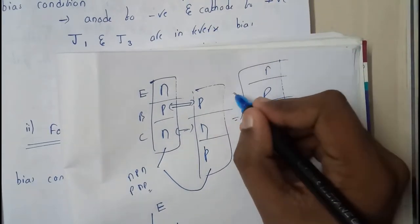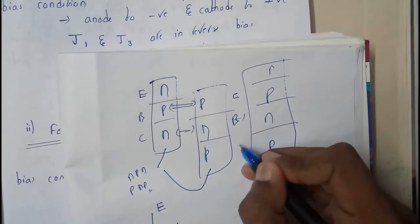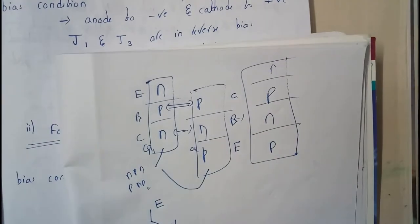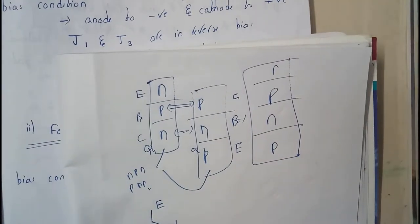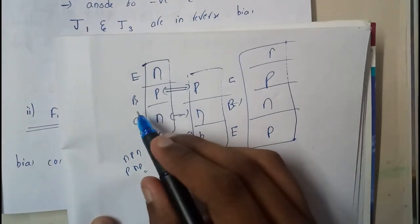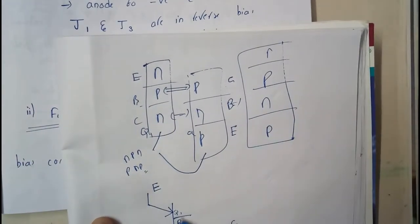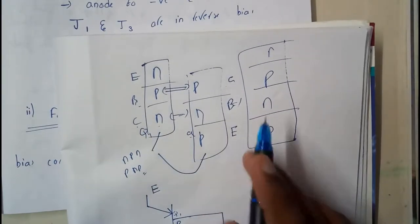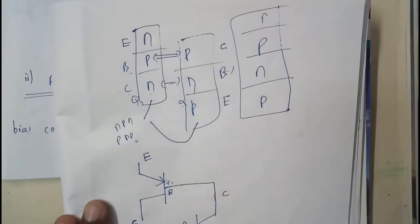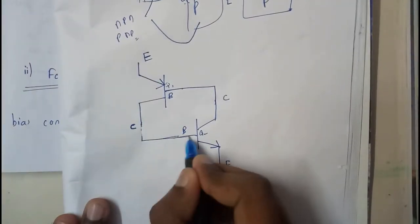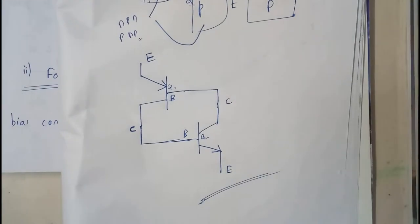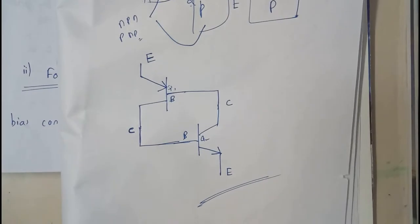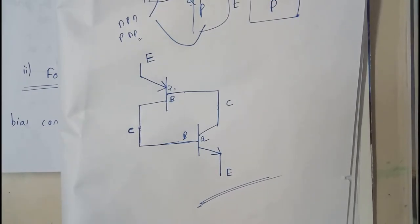Let's call the first transistor Q1 and the second Q2. Q1's base is connected to Q2's collector, and Q1's collector is connected to Q2's base. This is how we form the diagram of an SCR using two different transistors.